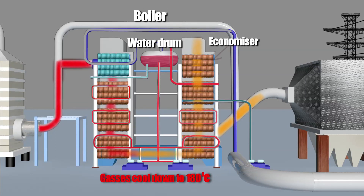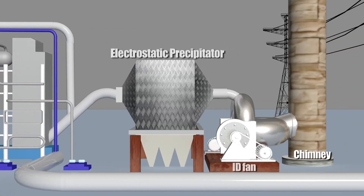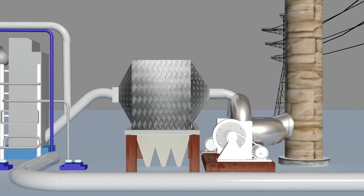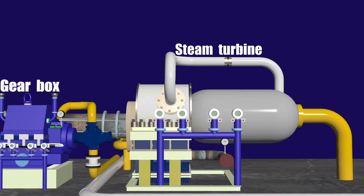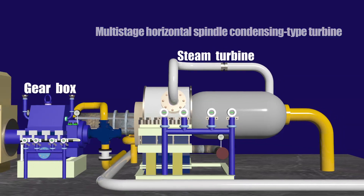The gases then enter a bare tube economizer. An ID fan takes care of the gas draft losses in the system. The steam turbine is of multi-stage, horizontal spindle, condensing type.